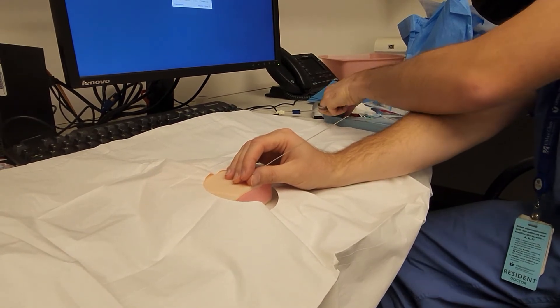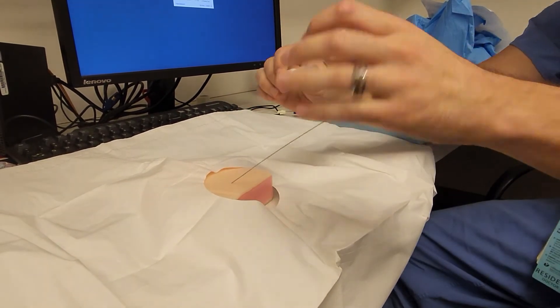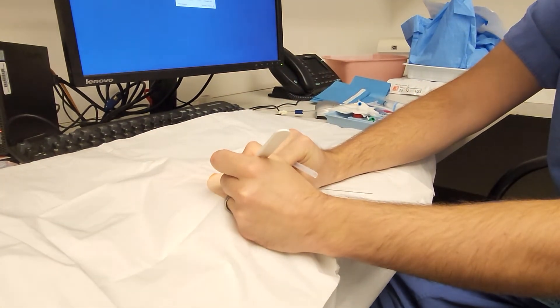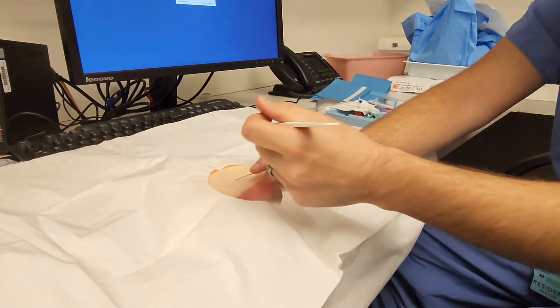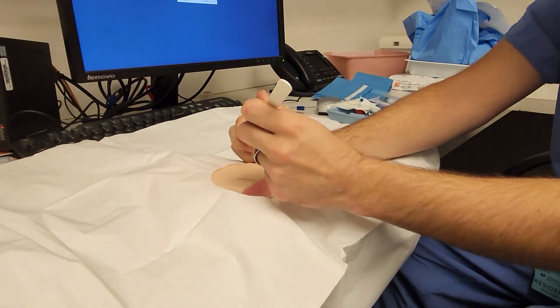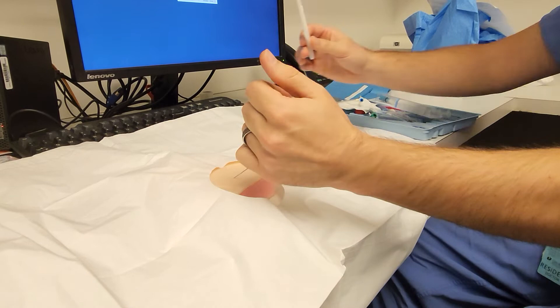Use your scalpel to make a small nick in the skin. This needs to be a little bigger than the one used when you make a nick for a triple lumen.